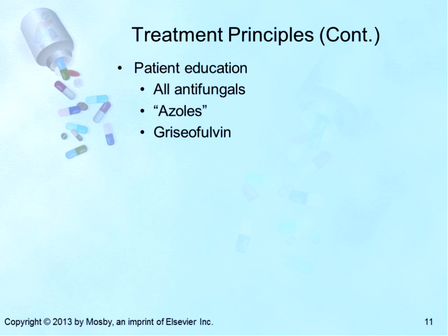Fluconazole has been considered category D because pregnant women taking ongoing high doses may be at increased risk for having a baby with birth defects. Risk is labeled category C for a single low dose of 150 mg to treat vaginal yeast infections, but long-term high doses increase the risk of birth defects. For those taking a single 150 mg dose for vaginal yeast infection, little risk for problems has been documented. Patient education for antifungals: they should be taken as prescribed. Inadequate treatment periods may result in poor response or early recurrence of symptoms. Fungal infections require long-term treatment.